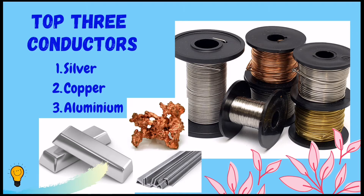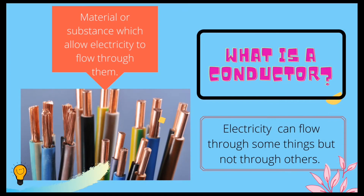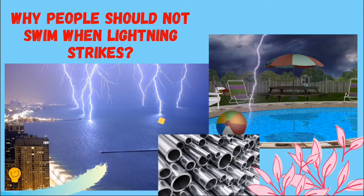Of all the materials, the top three conductors are silver, copper, and aluminium. They conduct electricity because they allow electrons to flow easily from atom to atom. Examples include metal screws, a metal spoon, fork, knife, and metal key. The most important role of a conductor is in making electrical wires and cables.